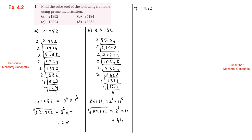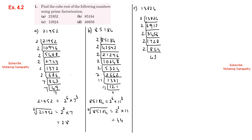Next number: 138240. Dividing by 2 and 3: 6 times 12, 9 times 18. Continuing the factorization, we get 2 power 9 into 3 power 3. So 138240 equals 2 power 9 into 3 power 3.